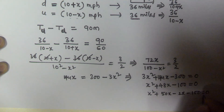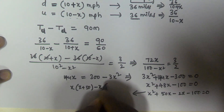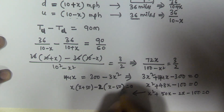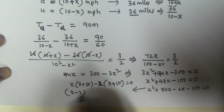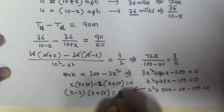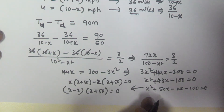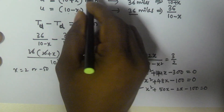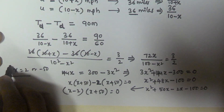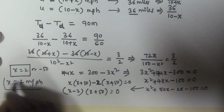We can write this as x squared plus 50x minus 2x minus 100 equals 0. This factors as x times (x plus 50) minus 2 times (x plus 50) equals 0, giving us (x minus 2)(x plus 50) equals 0. So the values of x are 2 or minus 50. Since x is the speed of the stream, it must always be positive.